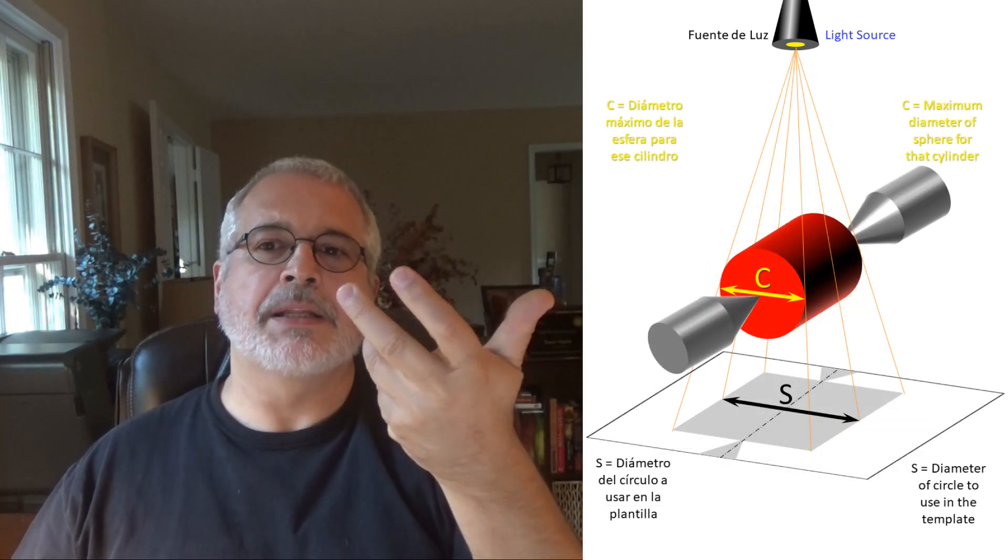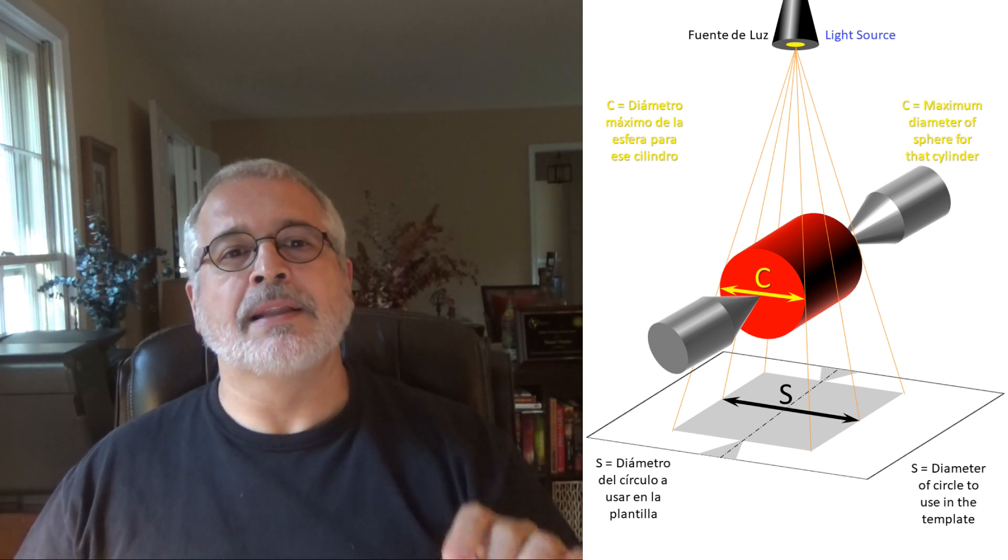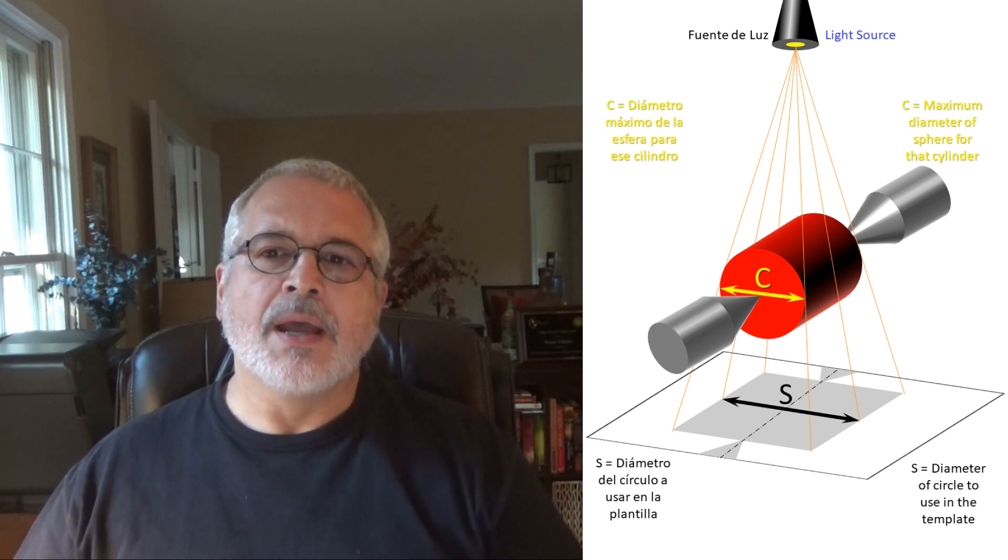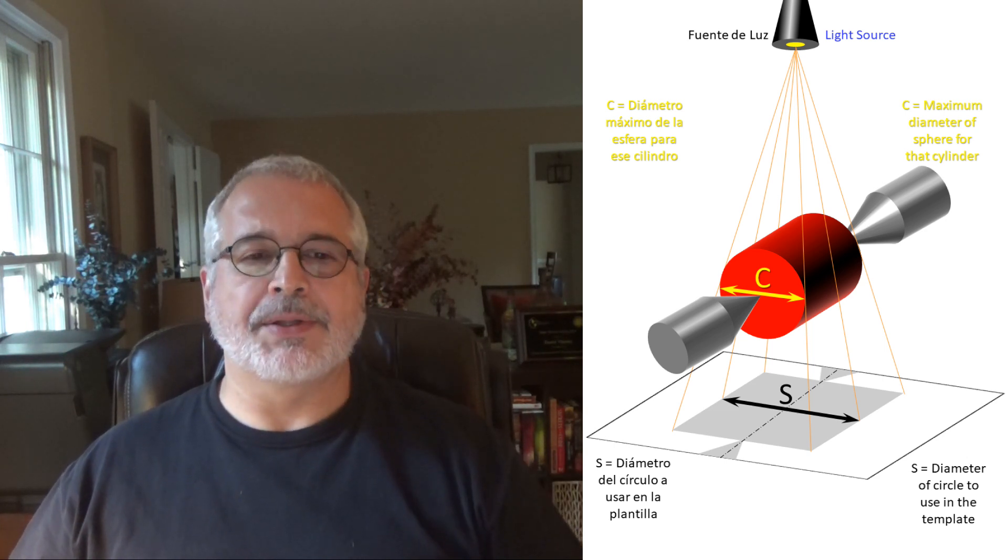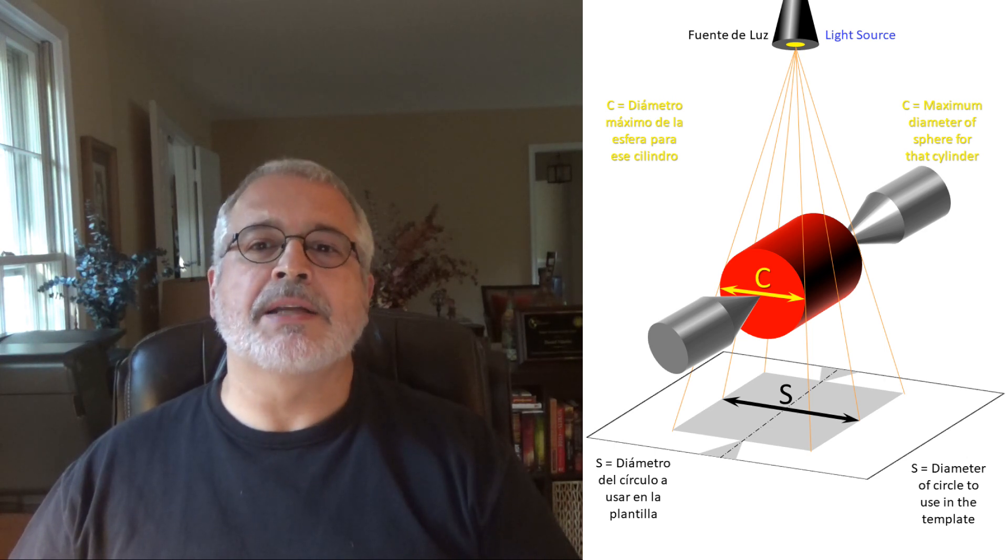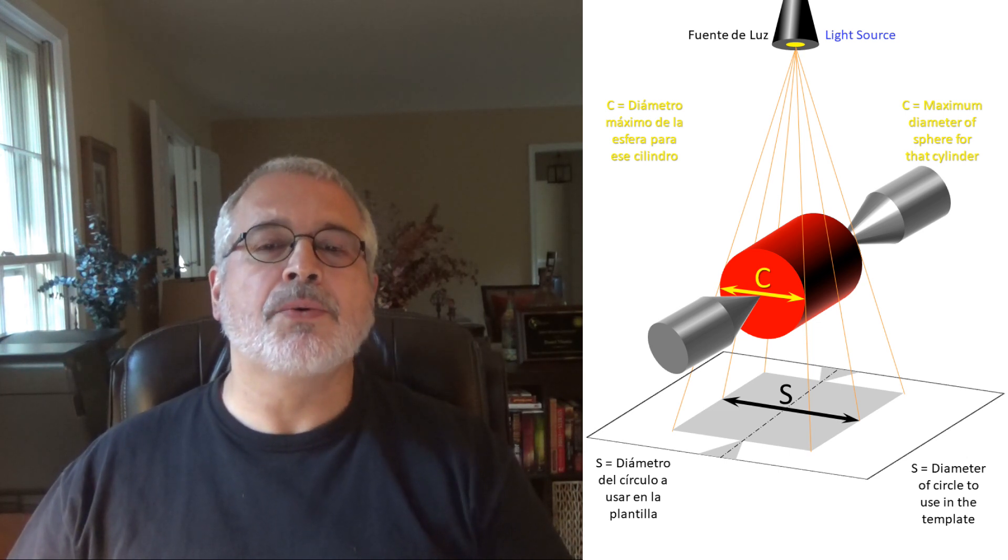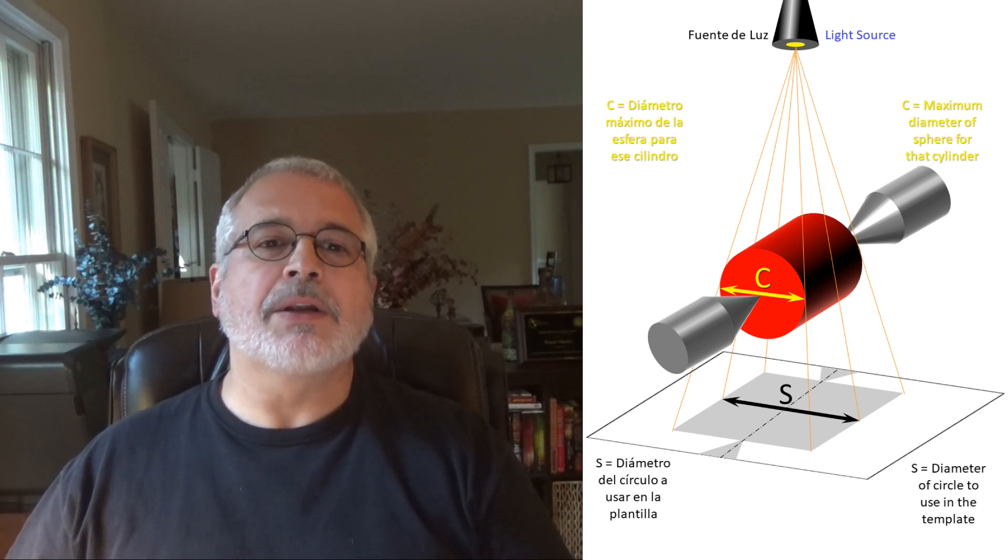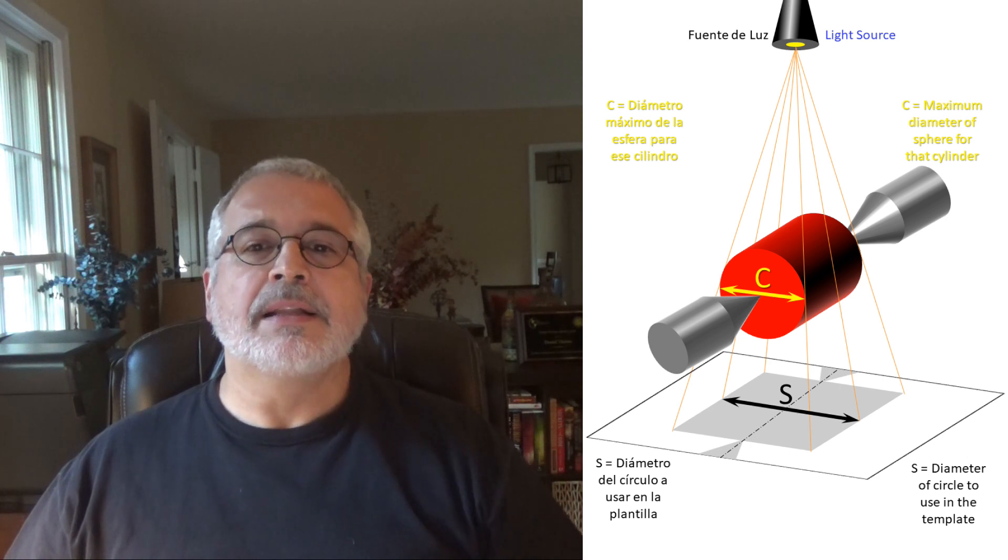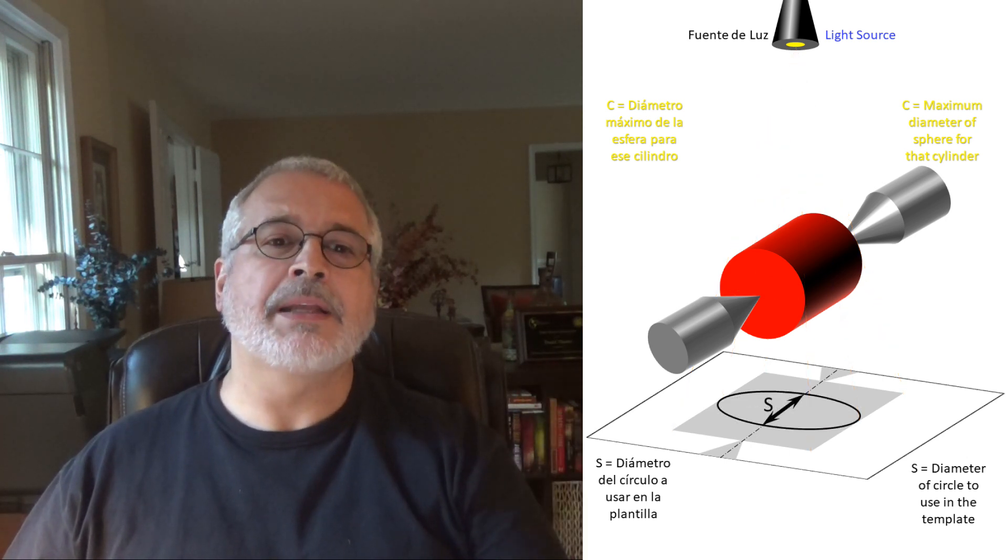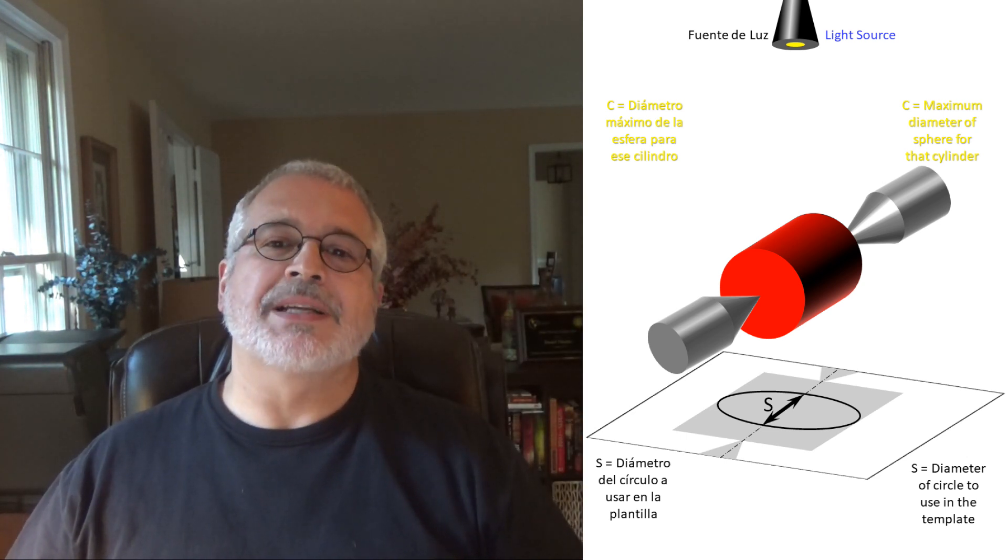In this slide, I rotated the perspective to see better the cylinder diameter, but I left the spur center and the live center as reference. Here you can see that the distance C in the slide refers to the cylinder diameter. This cylinder will project a shadow over the platform that will look like a rectangle. If we measure the shadow width perpendicular to the axis projection, and in this slide that measurement is called S, that distance is, for all practical purposes, the diameter of the circumference that we need to trace to use as a template.